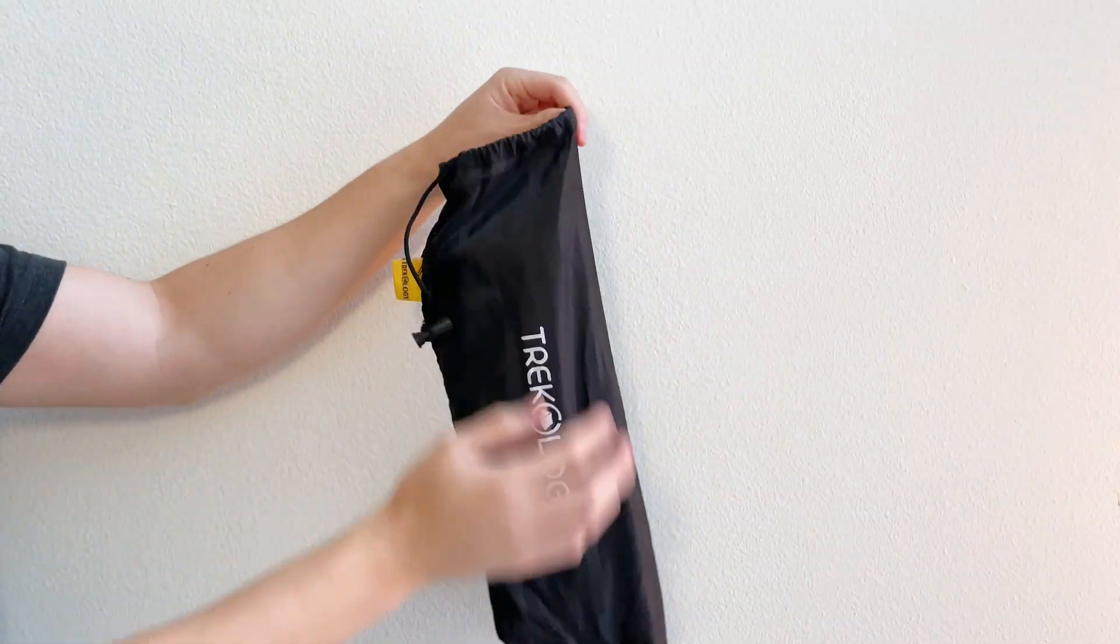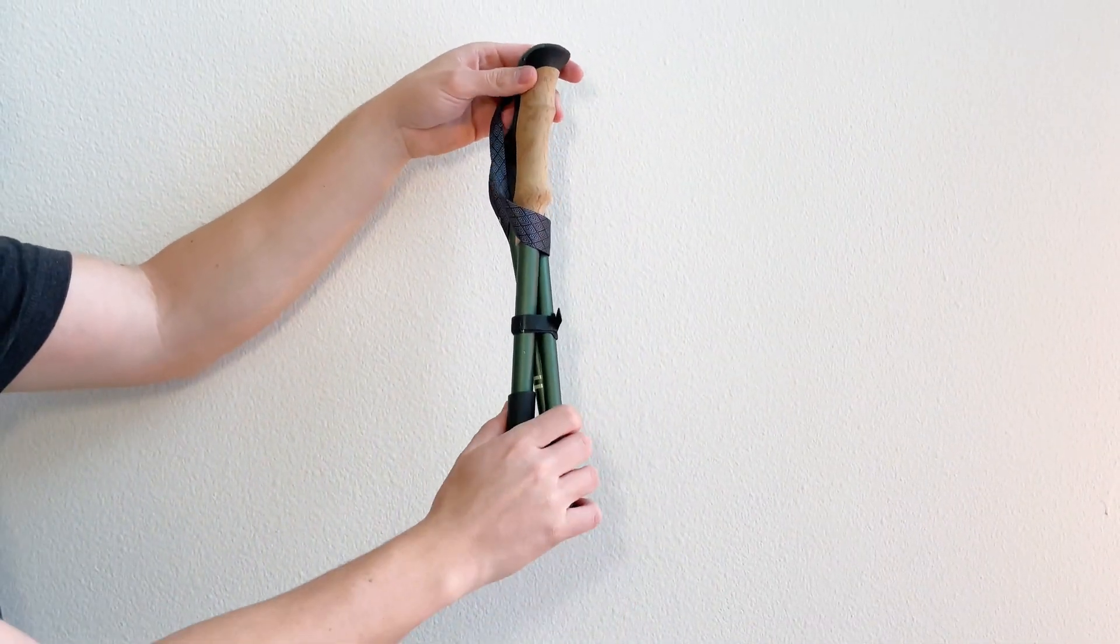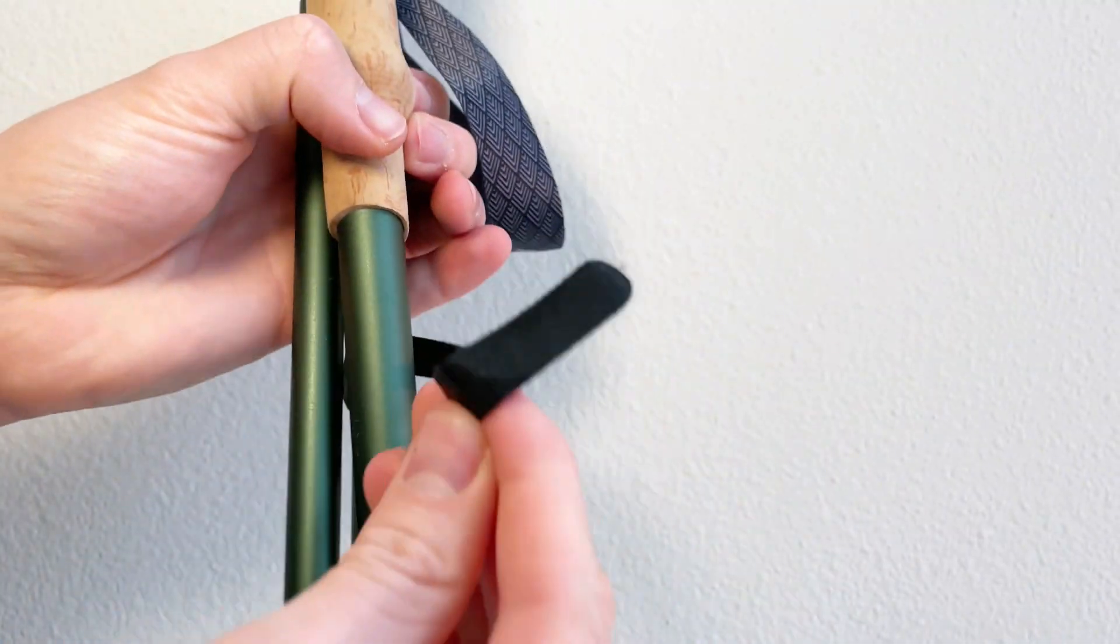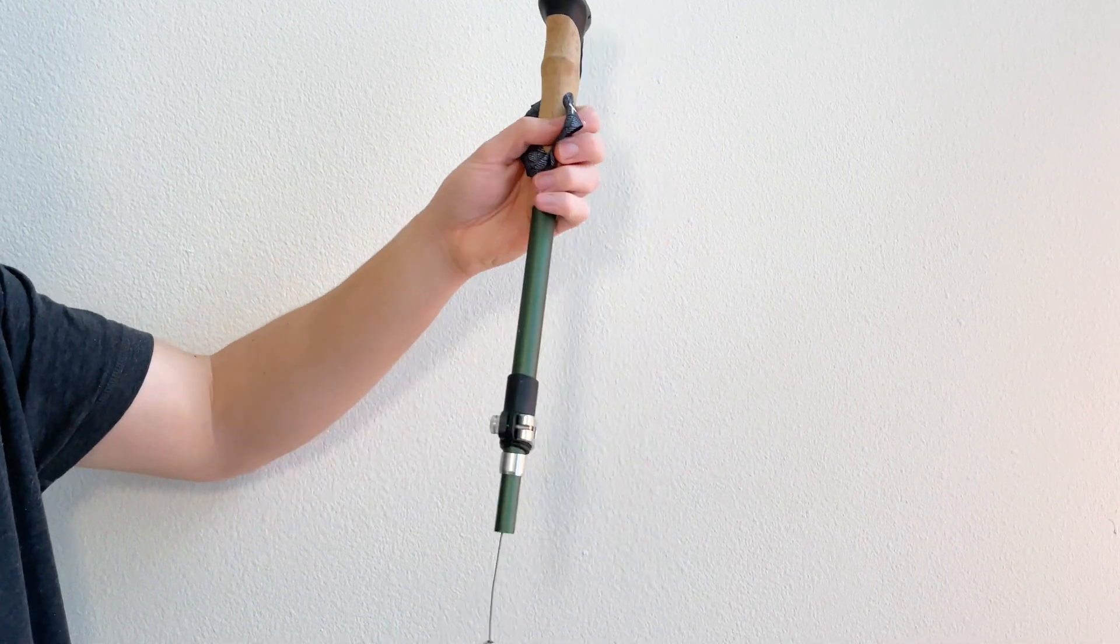The Trekology hiking poles serve as versatile tools aimed at enhancing the hiking experience. These trekking poles are both collapsible and lightweight, with a weight of just 10.5 ounces each providing crucial balance support for hikers.